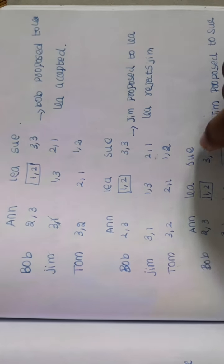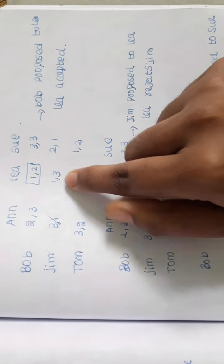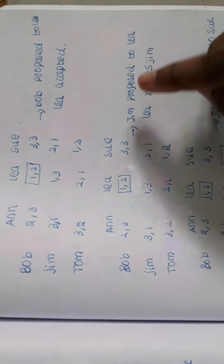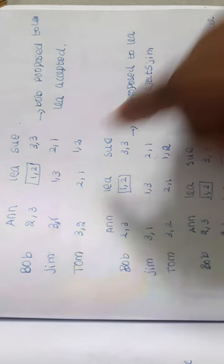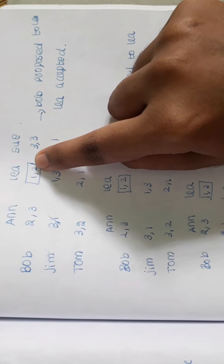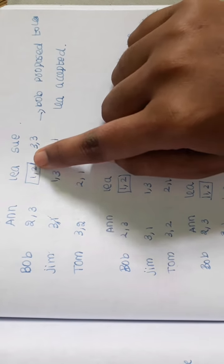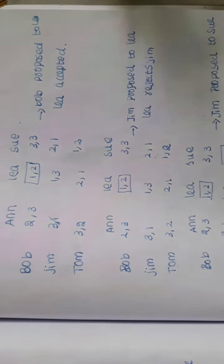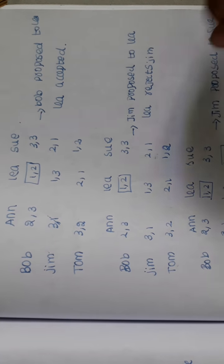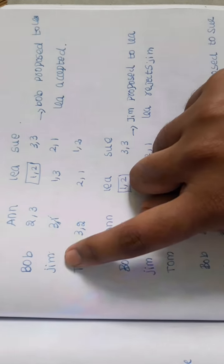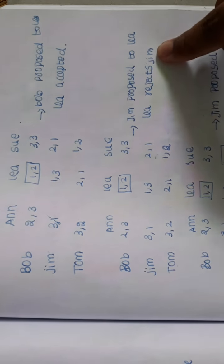Next is Jim. Jim is in first place. But now, Jim and Lee propose. Lee is the one who rejects. Why? If we look at Bob's priority, Bob is the priority for Lee. But Jim is ranked three. So we look at the girl's priority. Lee will reject Jim.